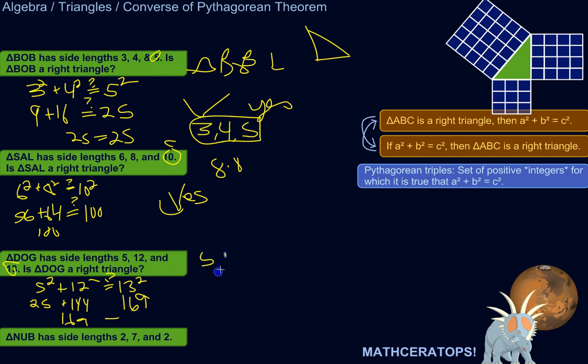So 5, 12, and 13, that's another Pythagorean triple. So with 10, 24, and 26, or some kind of multiple of those.